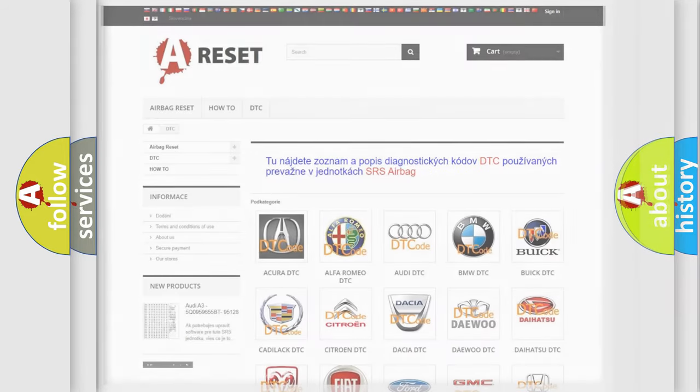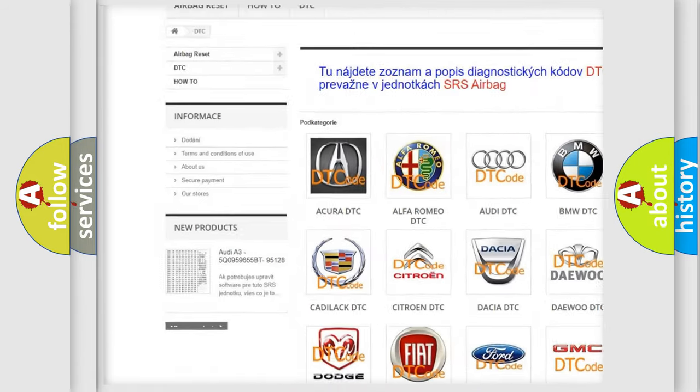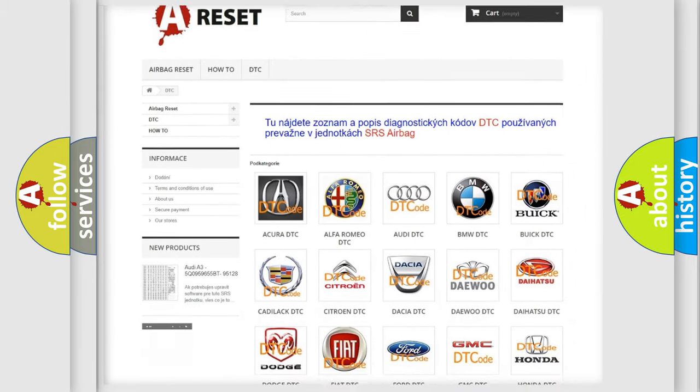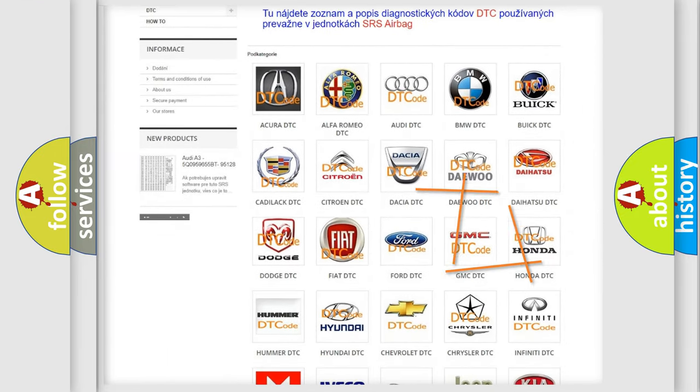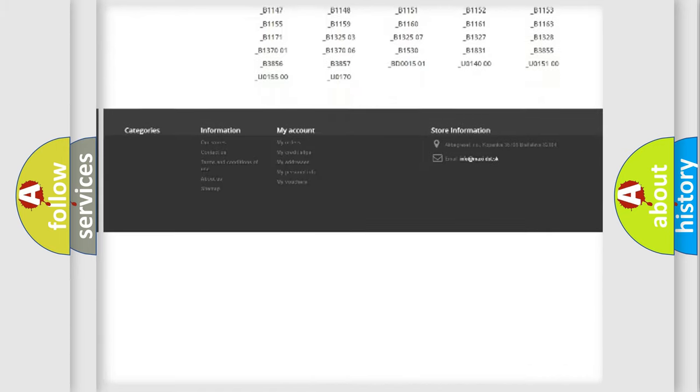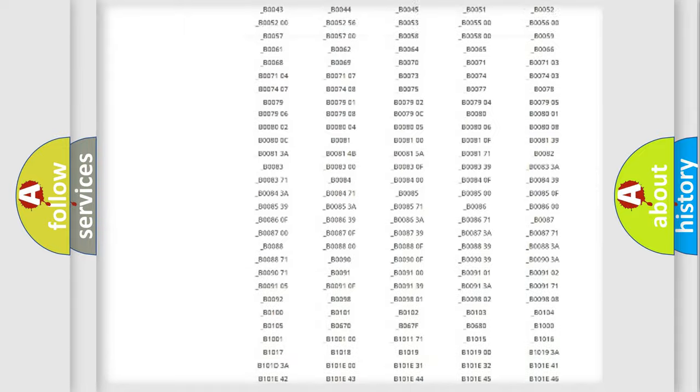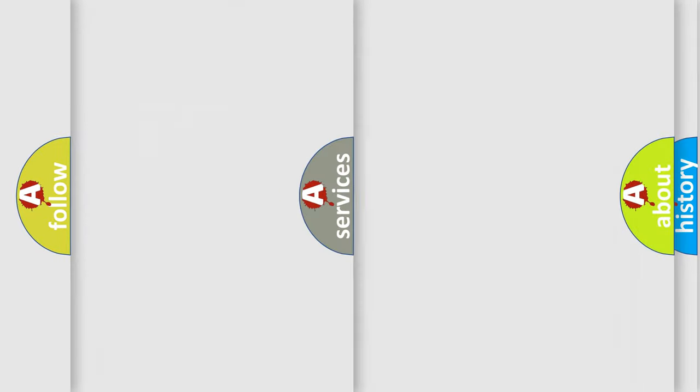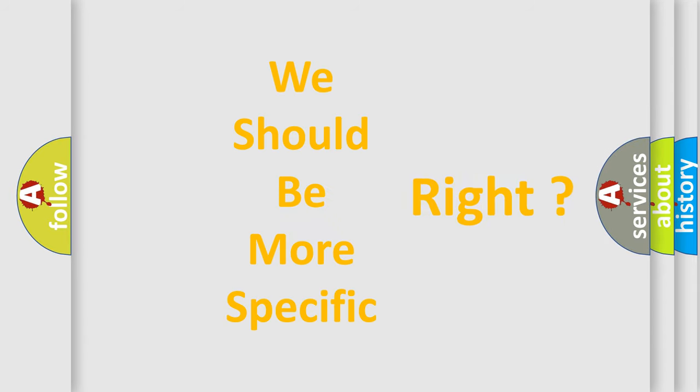Our website airbagreset.sk produces useful videos for you. You do not have to go through the OBD2 protocol anymore to know how to troubleshoot any car breakdown. You will find all the diagnostic codes that can be diagnosed in GMC vehicles, and also many other useful things. The following demonstration will help you look into the world of software for car control units.